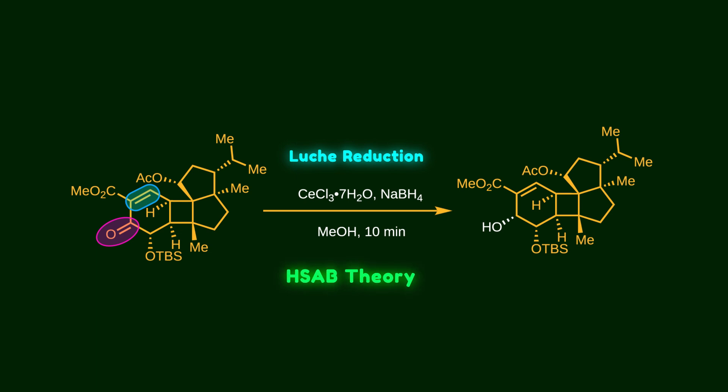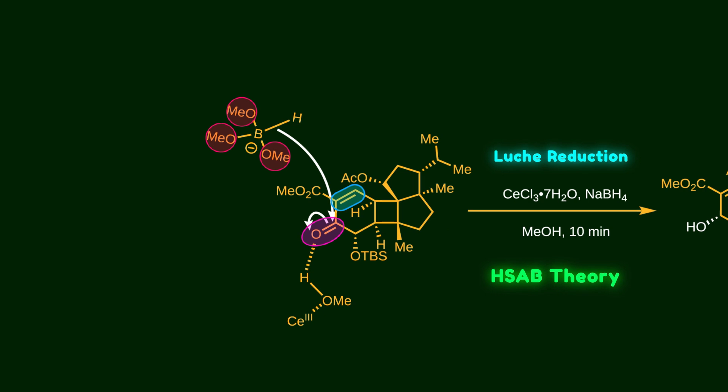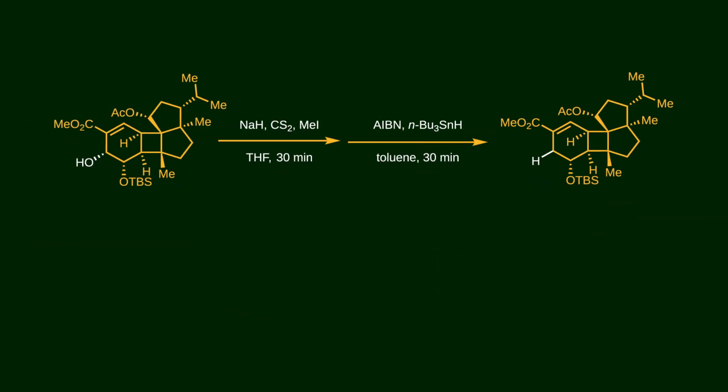If we want to reduce only the carbonyl group, we need a hard nucleophile. In this protocol, the hardness of the borohydride is increased by replacing a hydride group with a methoxy group that comes from the solvent. In addition, the cerium salt coordinates to the carbonyl, which increases the electrophilicity and makes it more reactive toward the reduction.